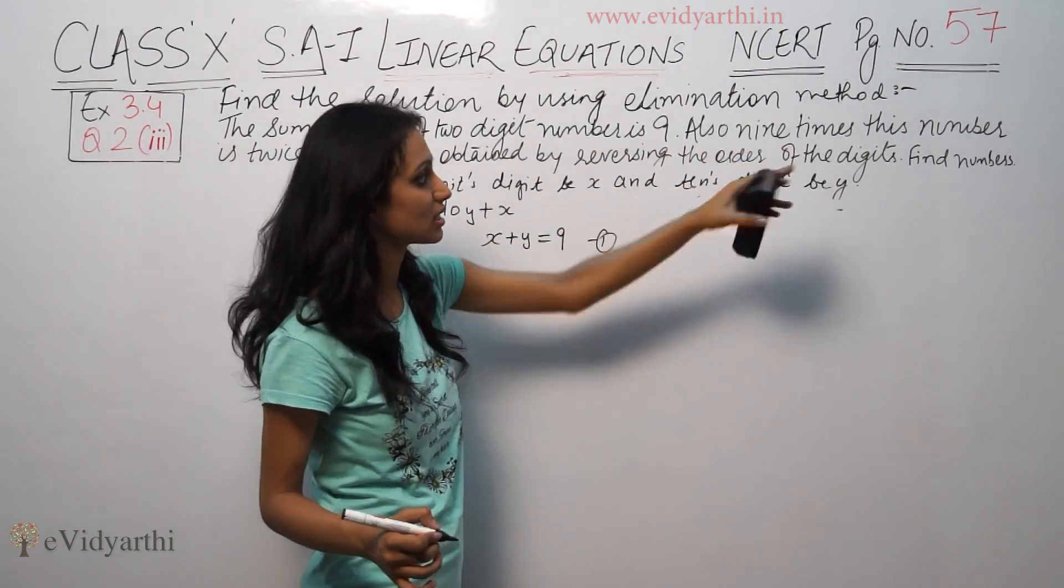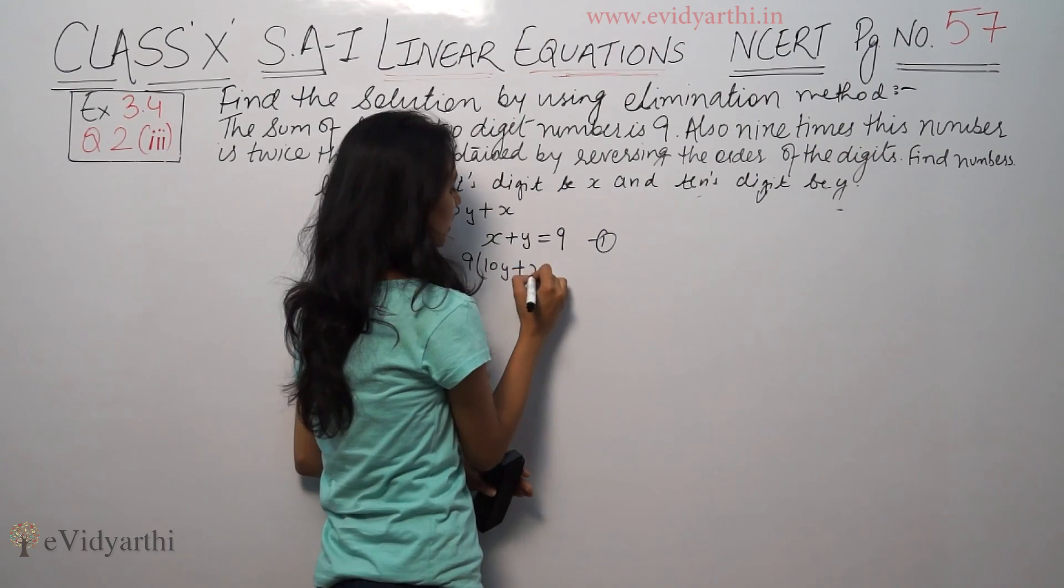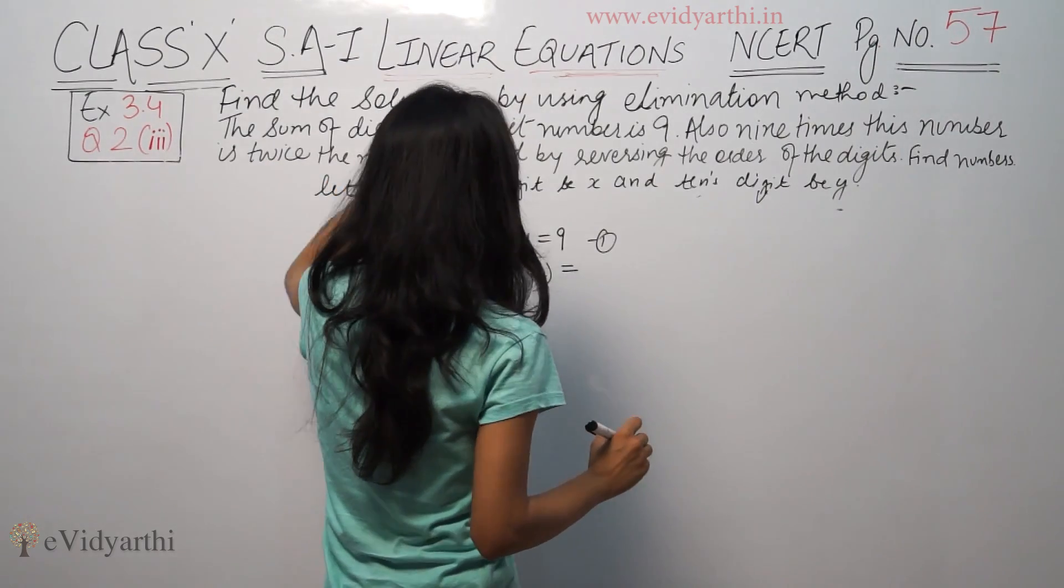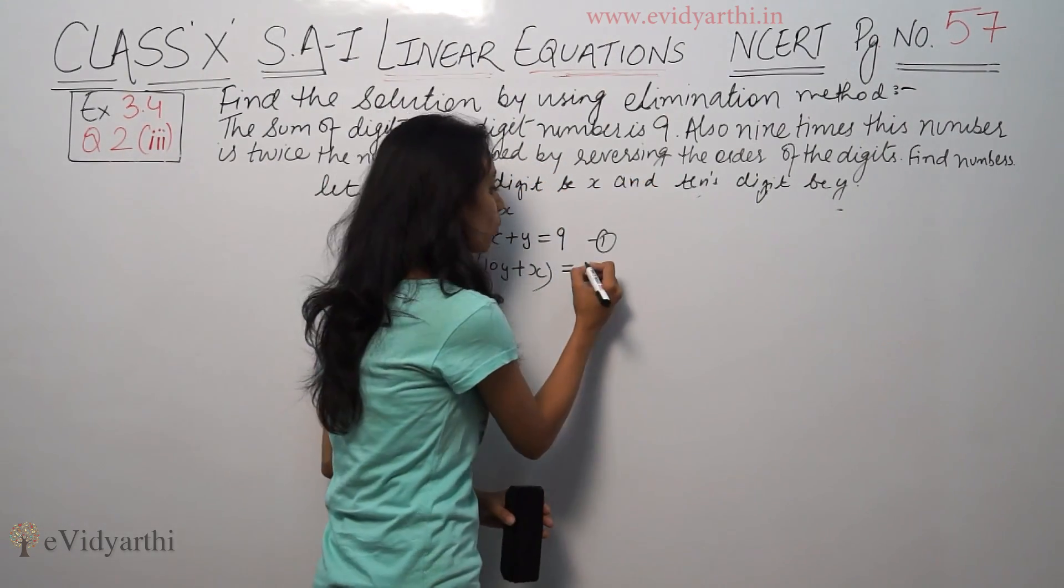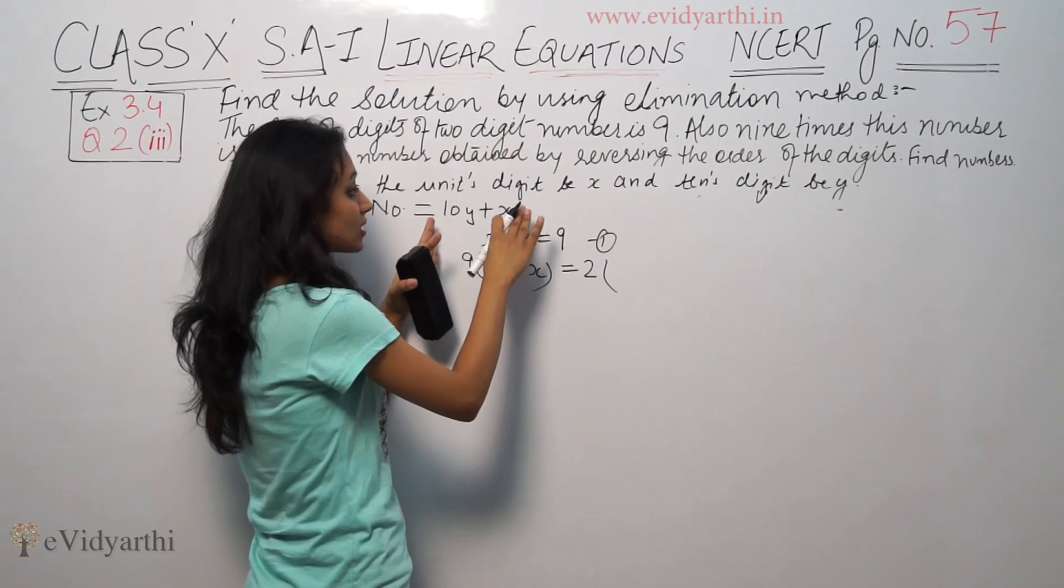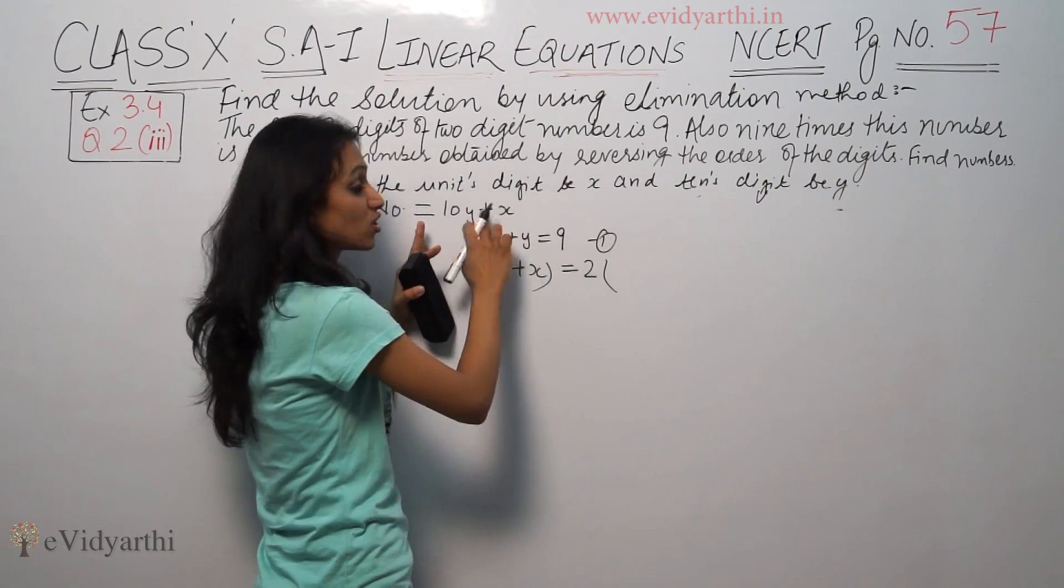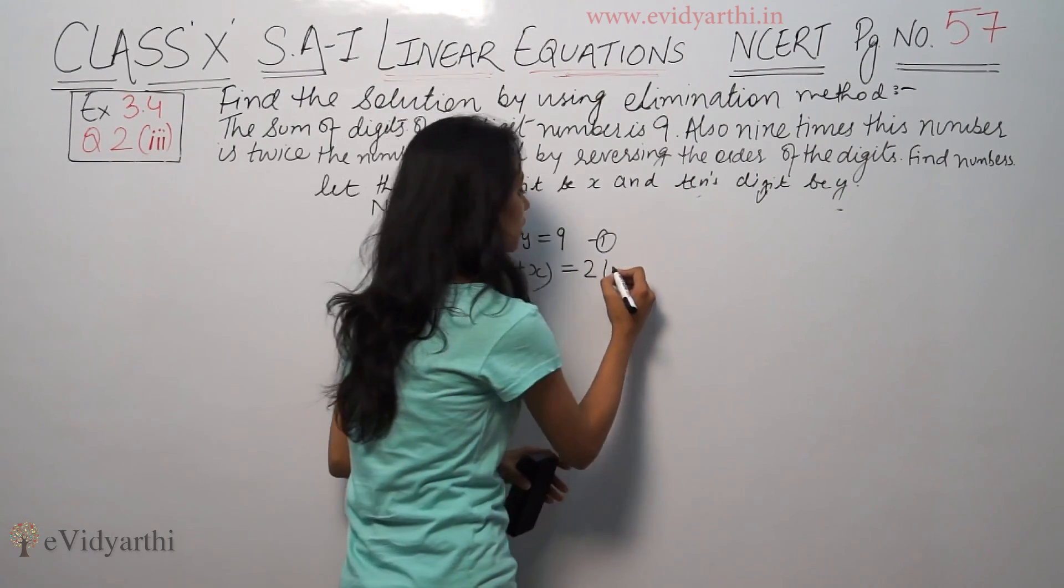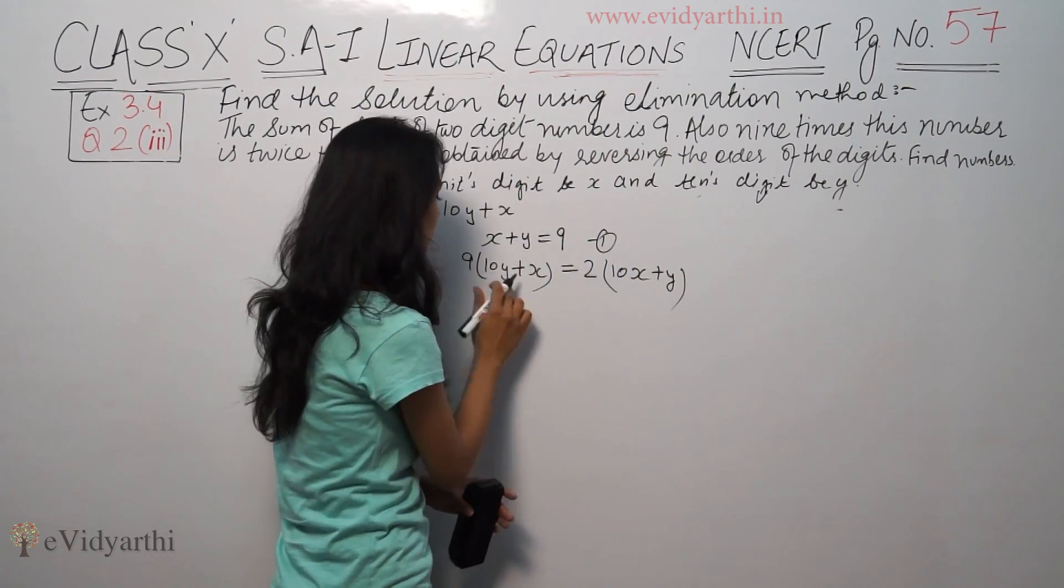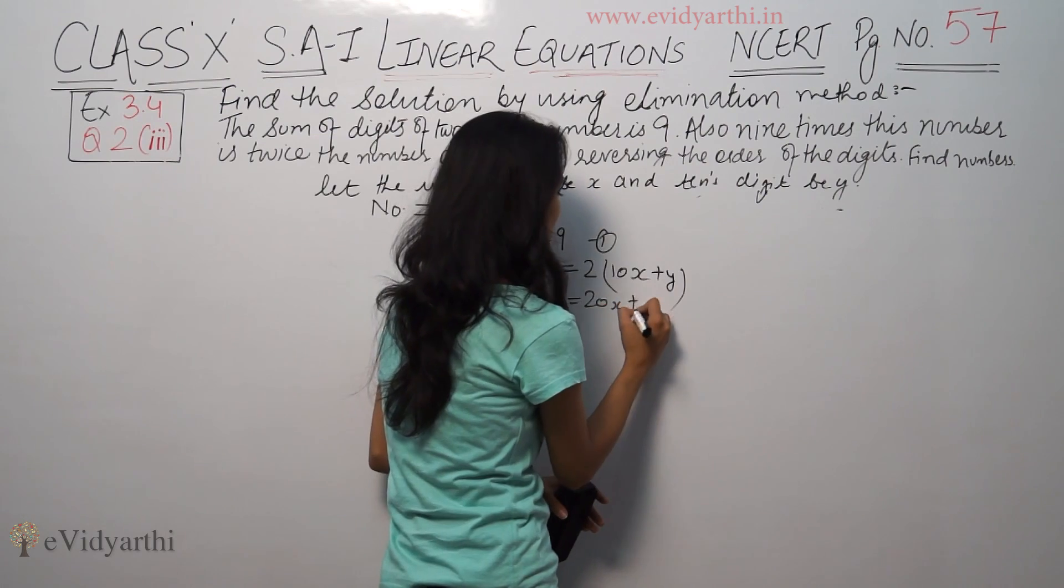Now, the second condition says 9 times this number is equal to twice the number obtained by reversing the order of the digits. The number obtained by reversing the order of the digits will reverse the order. So it is 10x plus y. So, 9 times the original number 10y plus 9x equals 20x plus 2y.